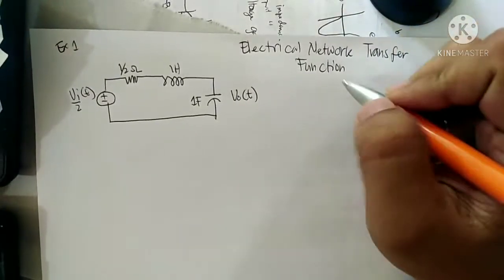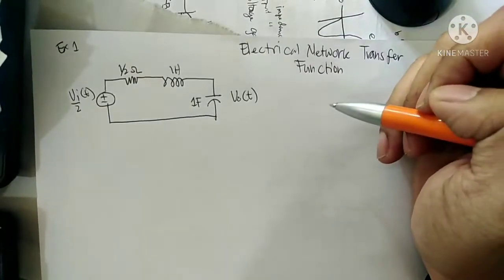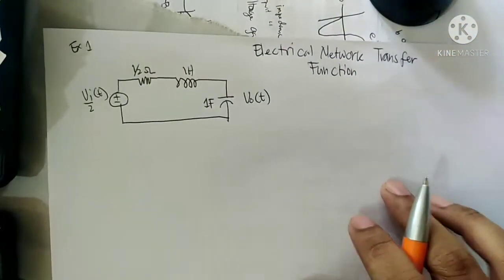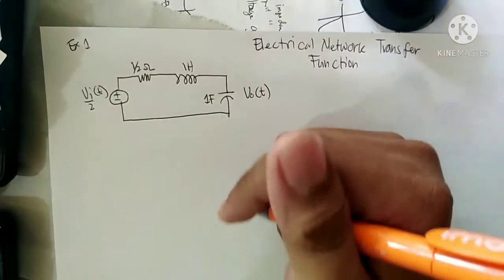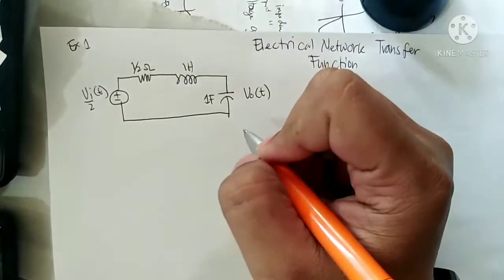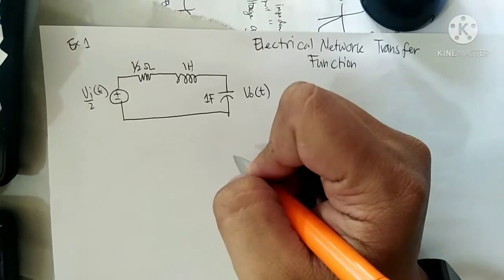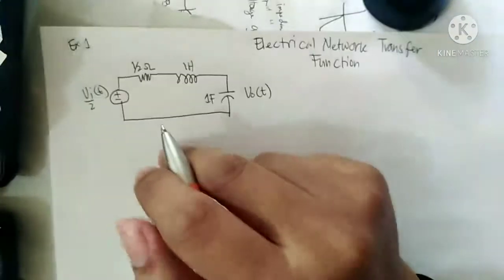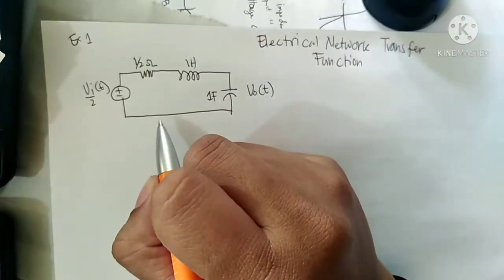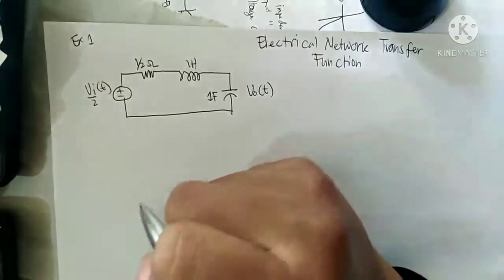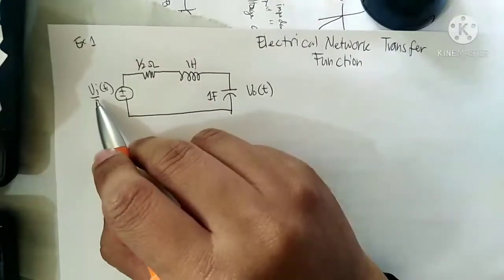We're going to have an example of electrical network transfer function. I've assumed that you've watched the videos on the transfer function, the RL circuit, and also the RLC circuit transfer function. This is the continuation of that topic. As you all know, in calculating the transfer function of an electrical network, you have to convert the circuit into the S-domain.